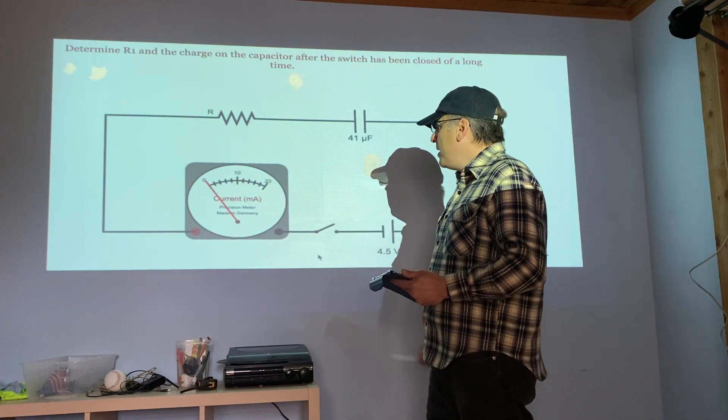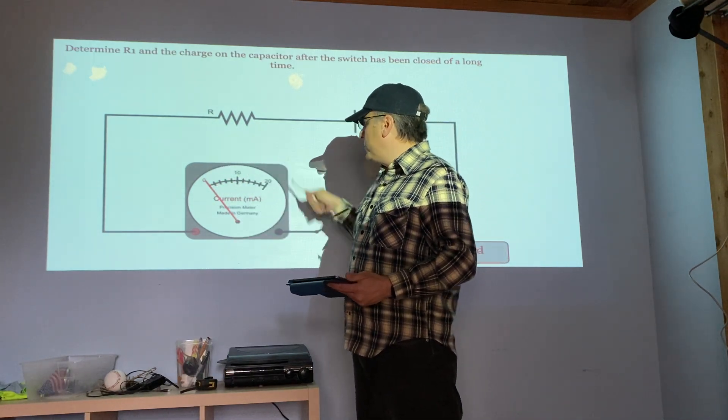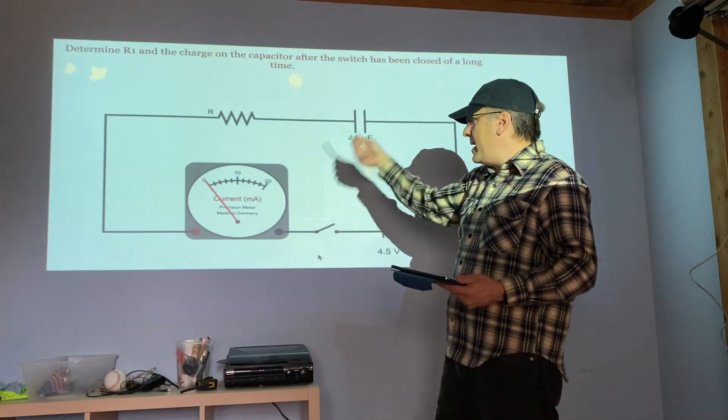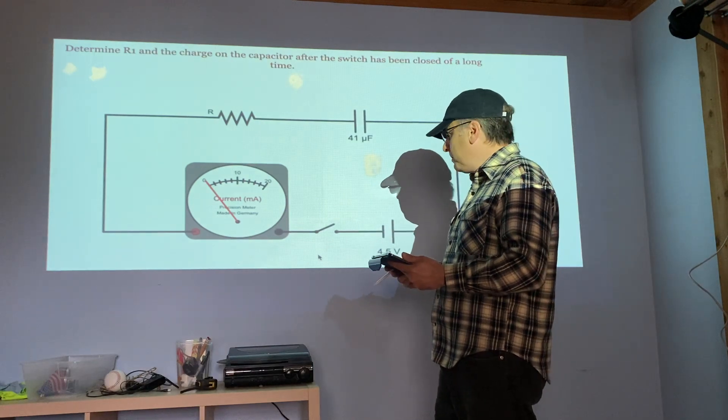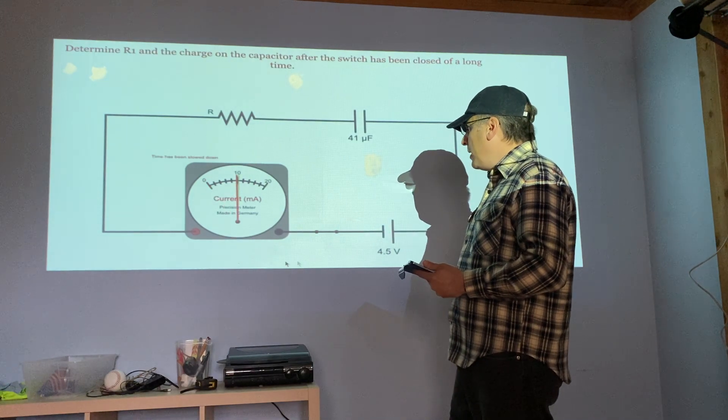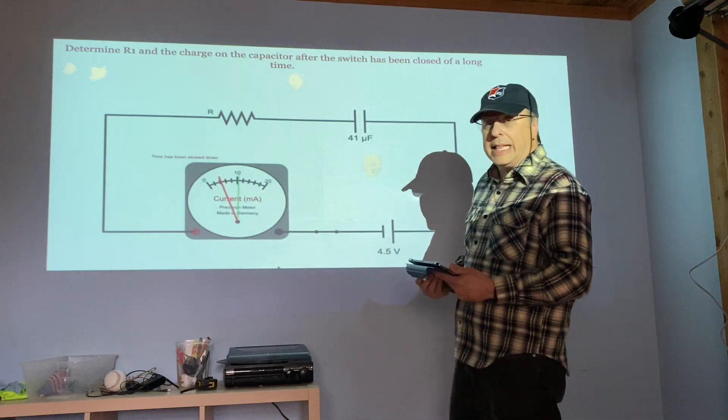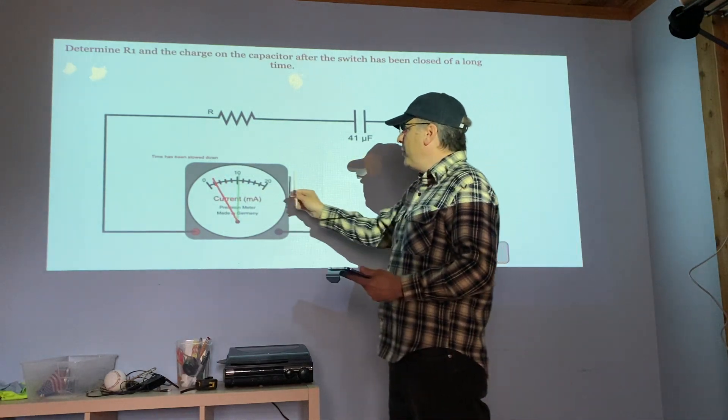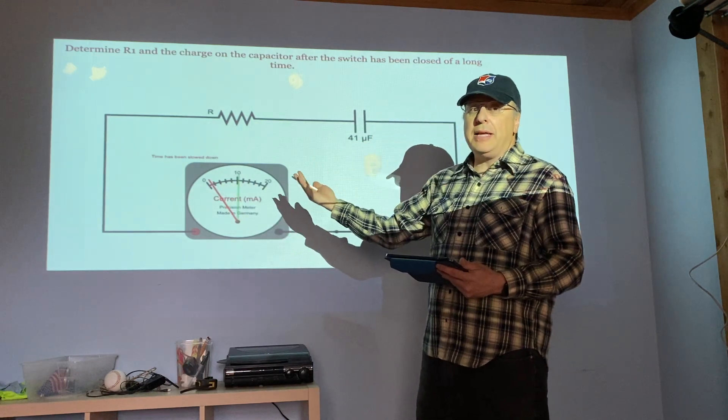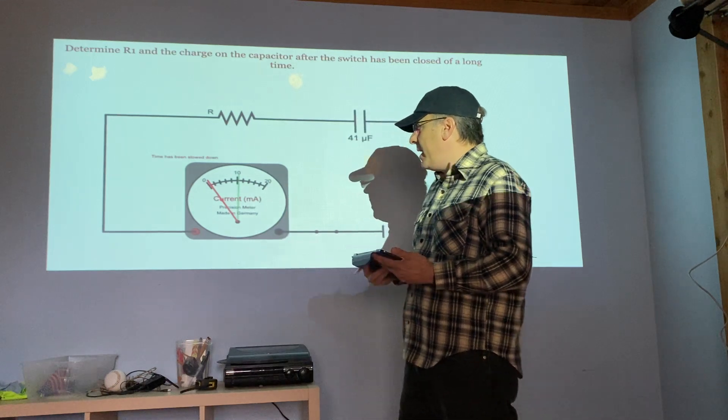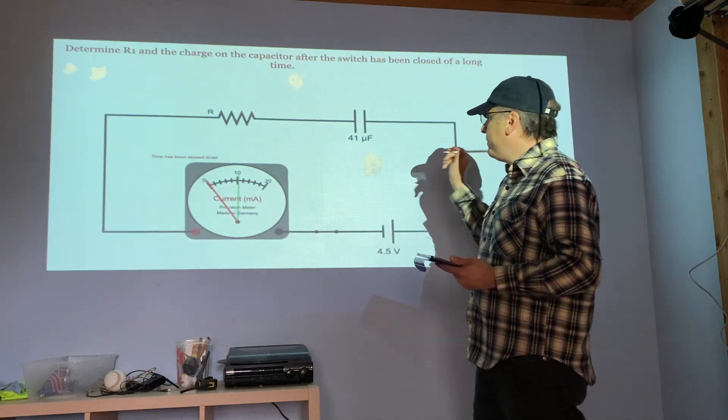What we're going to do is start with the switch open. When the switch is open we get no current because there is a break, there's no way anything can flow through this circuit. We're then going to close our switch and you'll notice that the current jumped up to almost 10 immediately, a little more than 10 actually, and then the current is slowly decreasing, rapidly at the beginning, less gradually near the end, back towards zero.